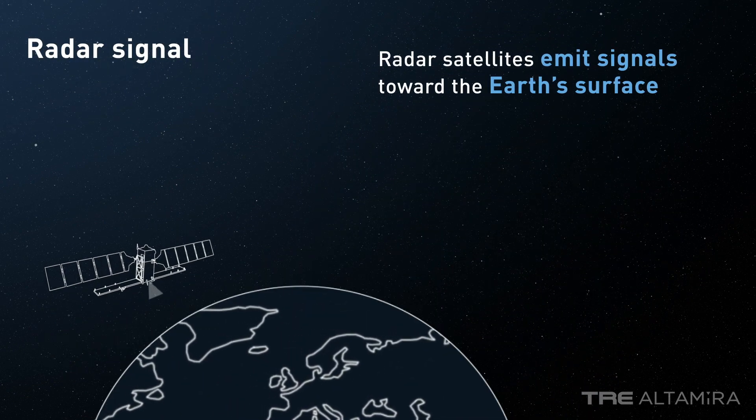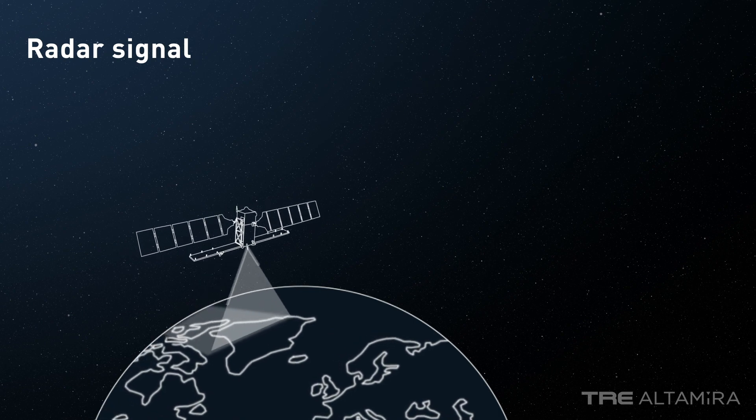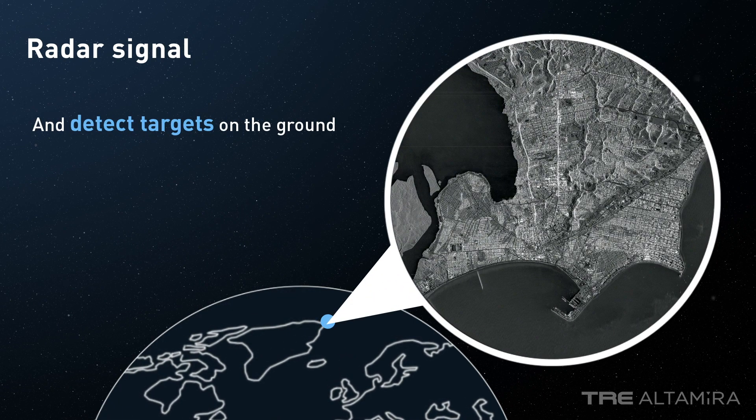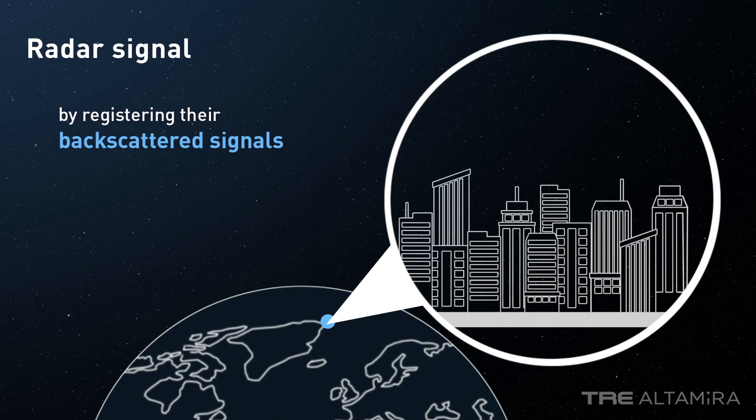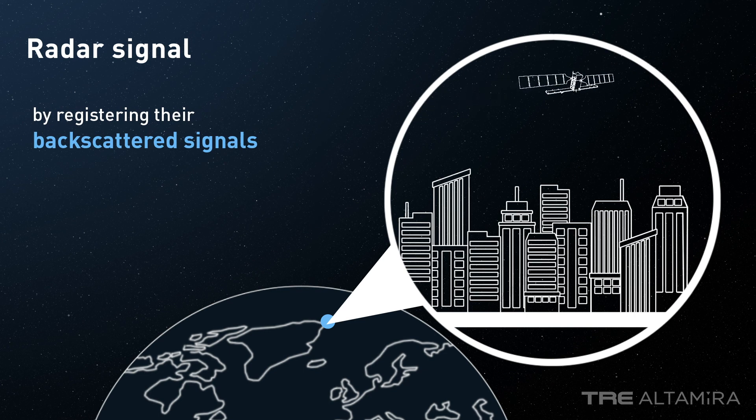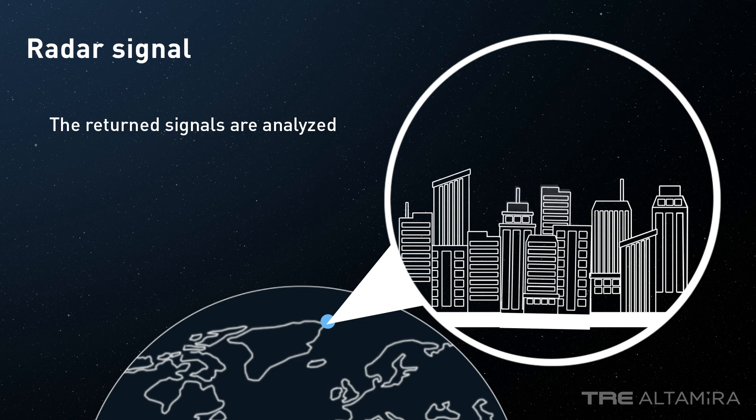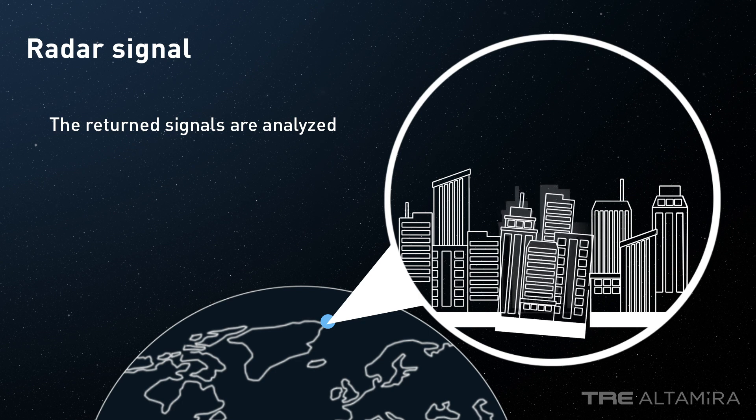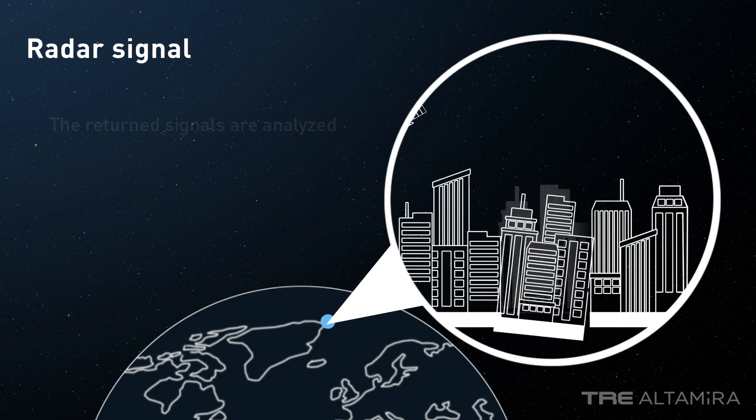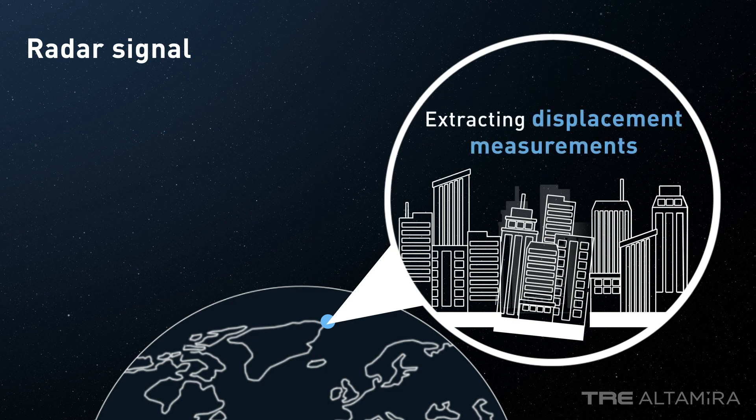Radar satellites emit signals towards the Earth's surface and detect targets on the ground—buildings, rocky outcrops, and uncultivated lands—by registering their backscattered signal. When a target moves, the distance between the sensor and the target changes. The return signals are then analyzed to track the movement of structures and the ground surface.